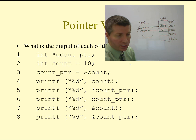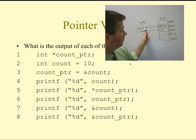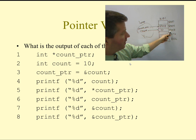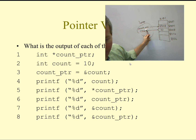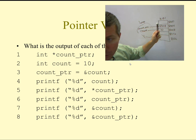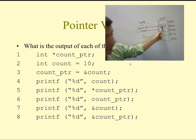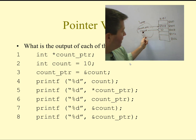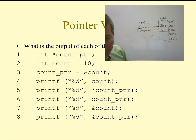On line 4, I print out an integer which is count — that prints the value 10. On line 5, I print out the dereferenced value of count pointer. When I dereference count pointer, it goes to the location pointed to by count pointer, gets that address — 8008 — goes to that address, and gets the value out of it. So line 5 also prints 10. On line 6, I'm printing the value of count pointer itself, which is 8008. Line 7 prints out the address of count, which is also 8008. On line 8, I'm printing the address of count pointer, which in this case is 8004.